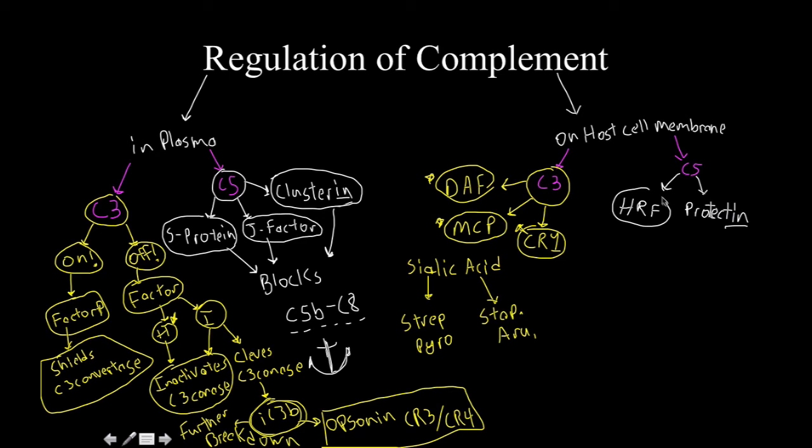And just how these over here block the anchor, both homologous restriction factor and protectin are going to block the drill. Which, in case that wasn't familiar to you last time, that is the C9 polymer that results in the rupture of the membrane. So, cool.